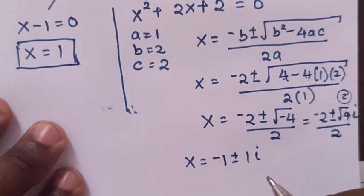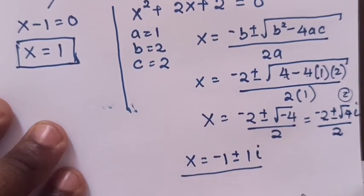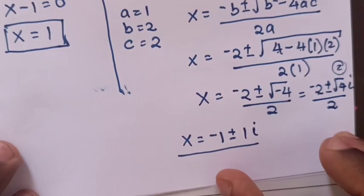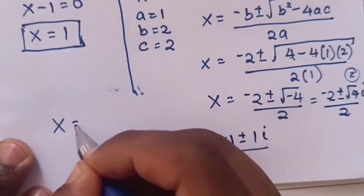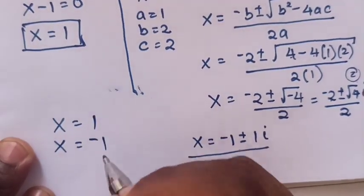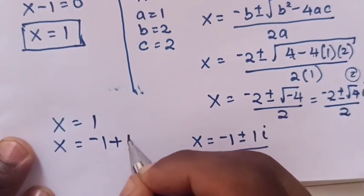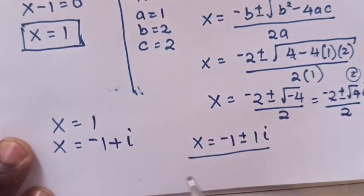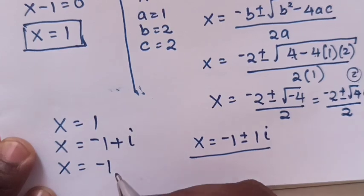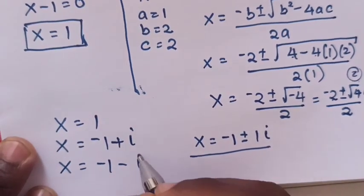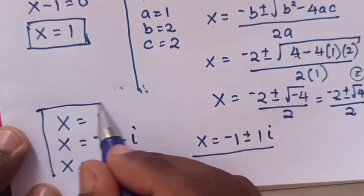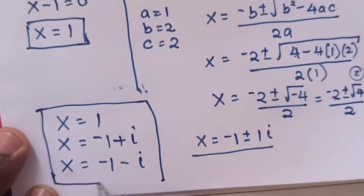So the values of x are: x equals 1, x equals negative 1 plus i, and x equals negative 1 minus i. These are the answers of our solution.